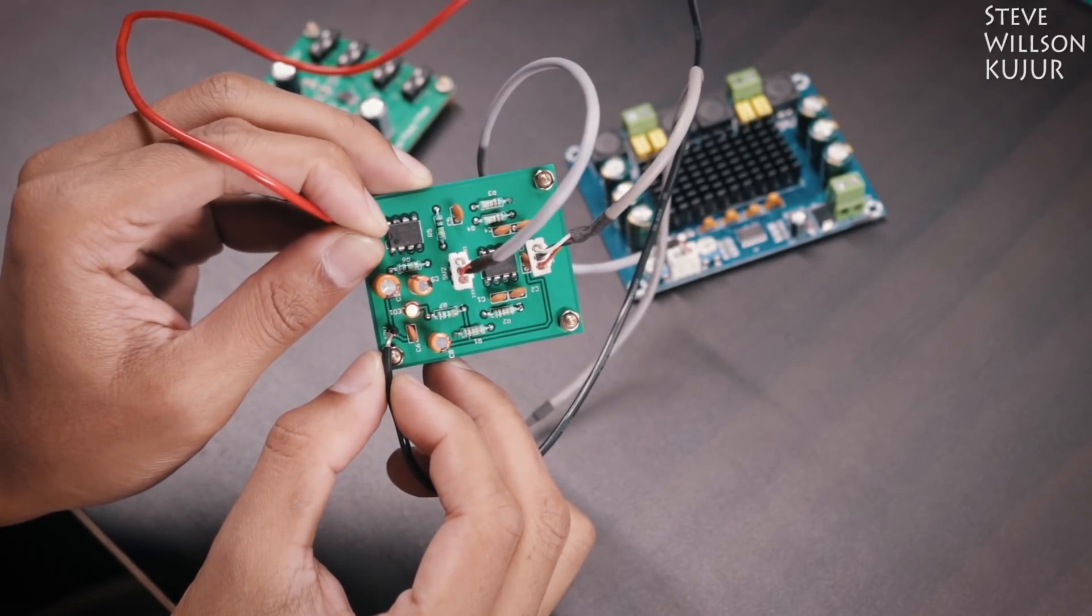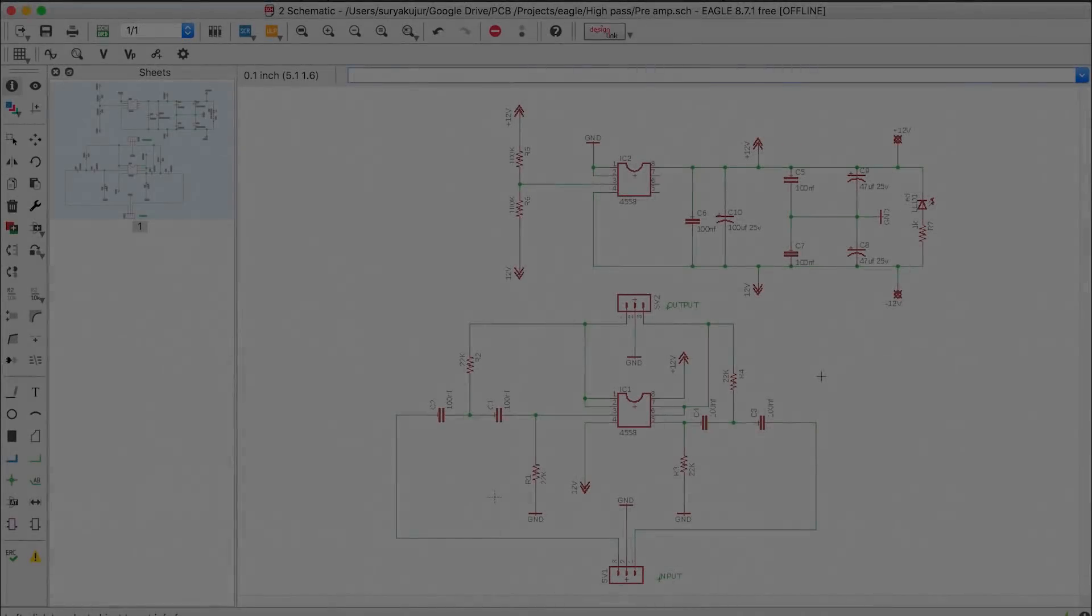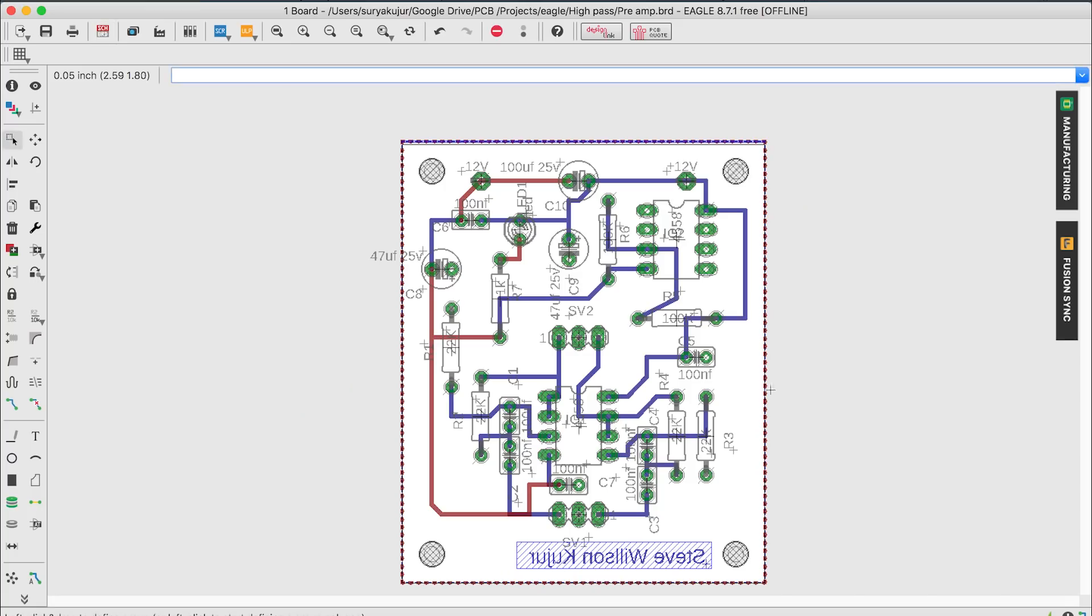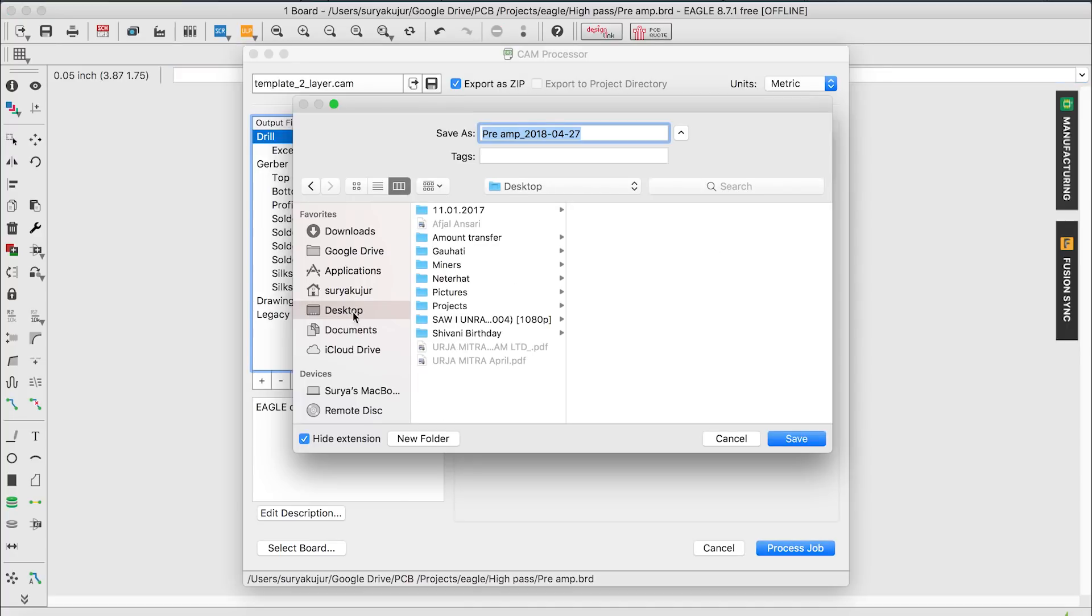Now let's start the build process. I used Eagle to create my circuit and then converted it into PCBs. And then I generated the Gerber files.